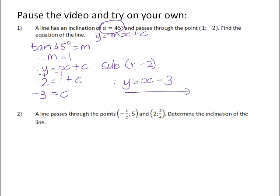Question two: A line passes through the points (-1/2, 5) and (2, 3 3/4). Determine the inclination of the line.